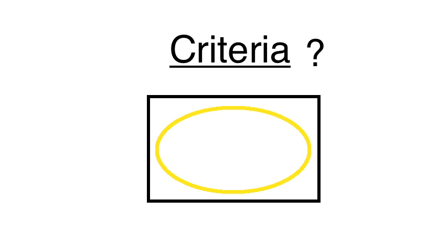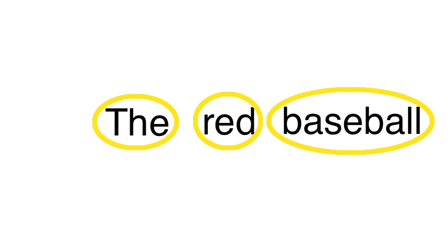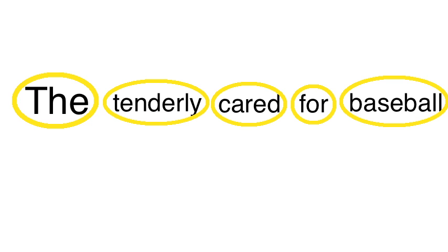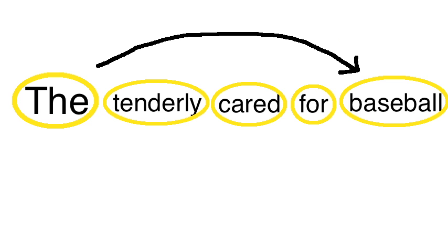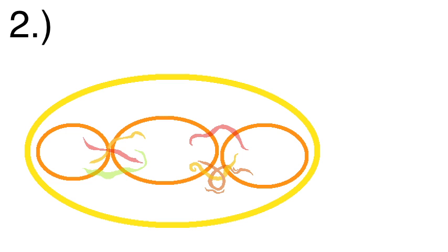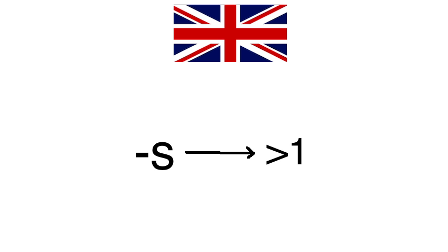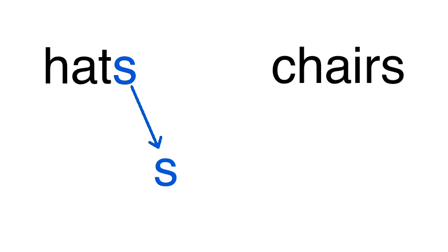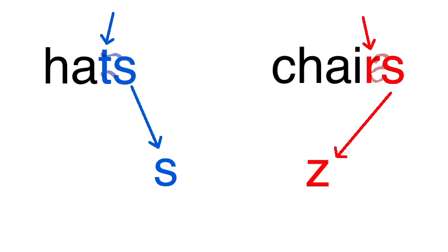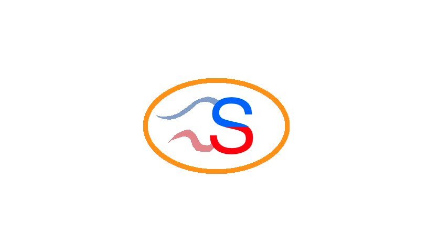So are there any other criteria we can use to establish wordiness? There are two big ones. The first is that words tend to be able to move around relative to each other. One of the reasons we know that 'the' is a word and not a prefix is because I can say 'the red baseball' or 'the tenderly cared for baseball' and it works just as well, even though 'the' is several leaps away from the word it's describing. With suffixes and prefixes, you can't do that. The second criteria is that within a word, different morphemes will often affect how others are pronounced, way more than just between words. We see this in English with the -s suffix: in 'hats' it's pronounced as an s sound, but in 'chairs' it's pronounced more as a z sound. What makes the difference is that hat ends in an unvoiced sound, while chair ends in a voiced sound, and the -s suffix changes its voicedness to match the sound that comes before it — indicating that it's a suffix and not a word.